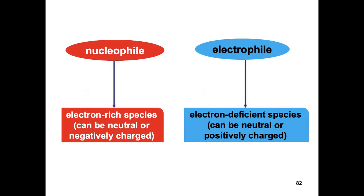Before you get into general types of reaction, you have to know the meaning of nucleophile and electrophile. Nucleophile is an electron-rich species — it can be neutral or negatively charged — while electrophile is an electron-deficient species — it can be neutral or positively charged.